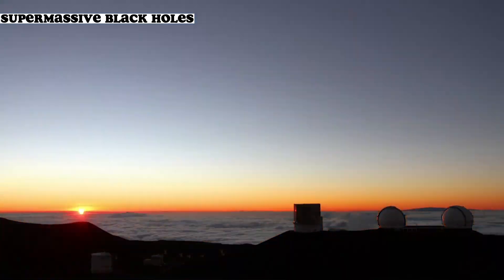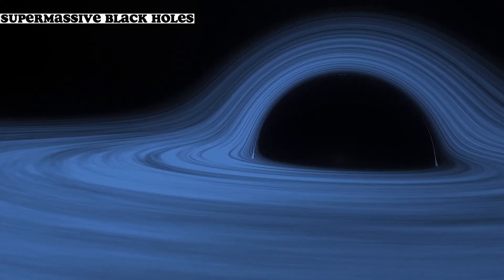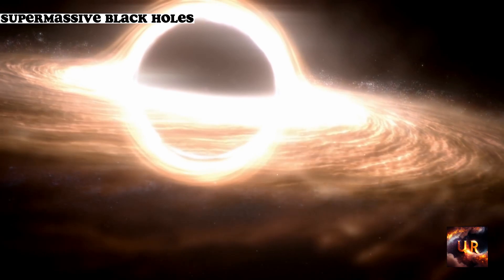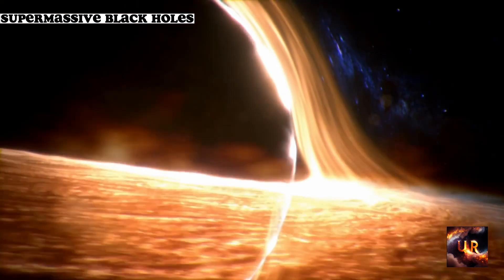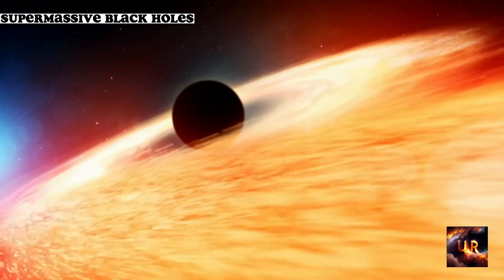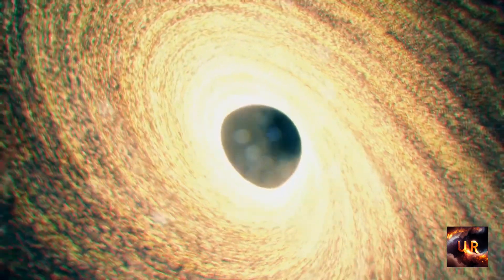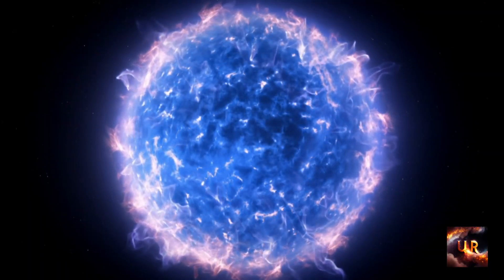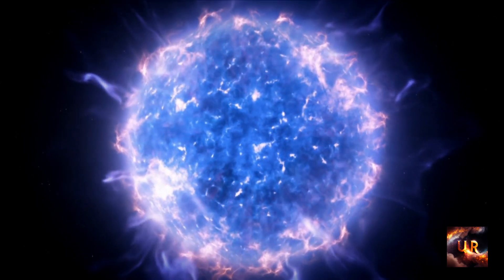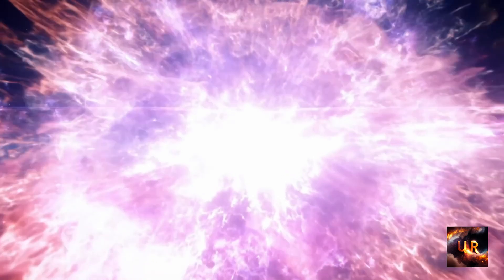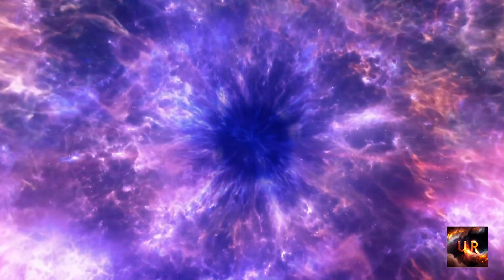One of the most interesting things about black holes is the event horizon, a boundary around the black hole beyond which nothing can escape. This means that once something crosses the event horizon, it is irrevocably pulled into the black hole and can never escape. Scientists believe that this boundary is where the laws of physics as we know them break down, making black holes some of the strangest and most mysterious objects in the universe.